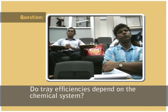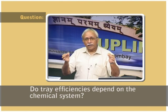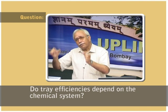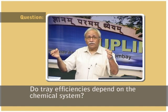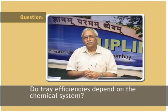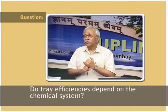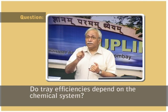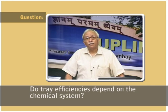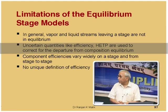Efficiencies depend upon the chemical system itself. For the same tray, if one column separates ethane-ethylene and another separates propane-propylene, the efficiency of the trays will differ because operating conditions and species are different. Efficiency depends on the chemical system, temperature, and pressure—and because it depends on the chemical system, it is location-dependent: the top of the column has different efficiency from the bottom. Uncertain quantities like efficiency and HETP are used to correct for departure from compositional equilibrium because there is no other way.